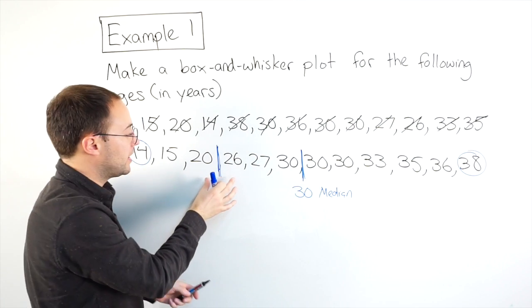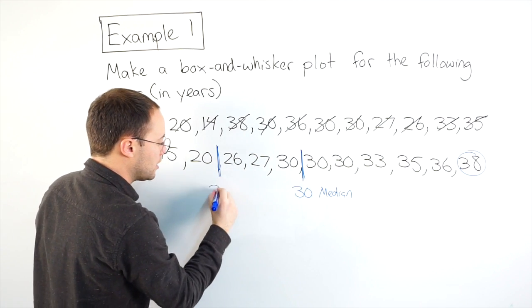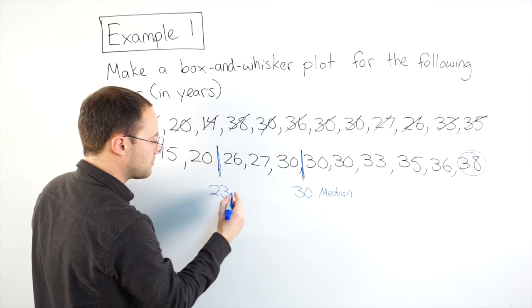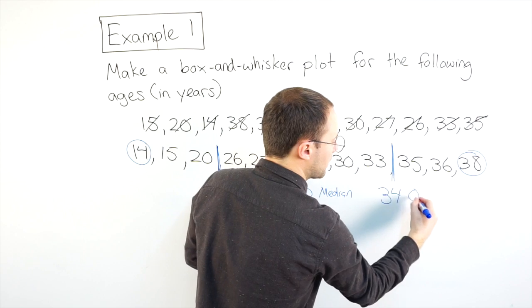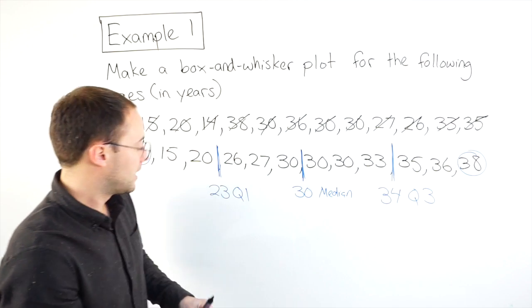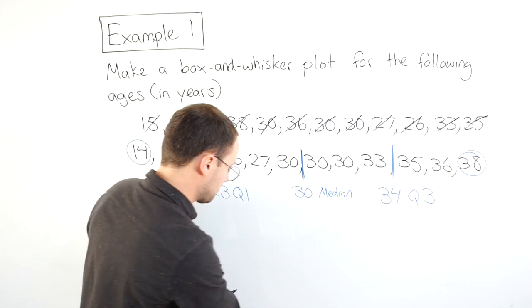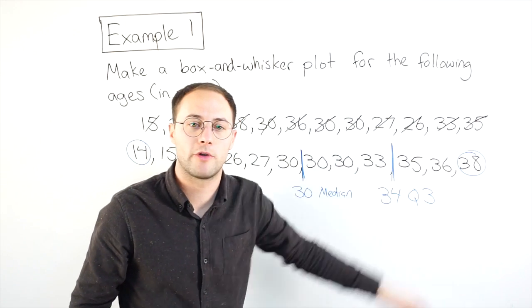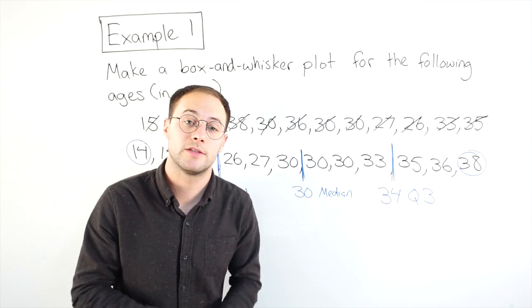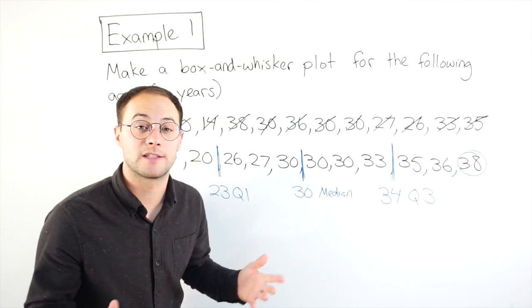Now, I find the median of my lower half for Q1. So, halfway between 20 and 26 is going to be 23. That's my Q1, which would be 34. That's my Q3. So, I've got my five number summary. Least value, Q1, median, Q3, and my greatest value. Now, I'm ready to do the box and whisker plot.